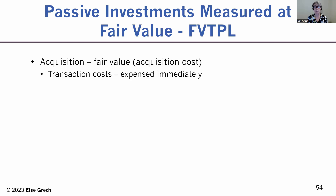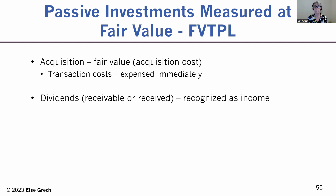Transaction costs, such as legal, broker, or administration fees, are immediately expensed on the income statement. This really makes sense considering how other gains and losses in this type of investment are also recorded. Dividends that are receivable or received are recognized in income as dividend income or dividend revenue — that's when the dividends are declared by the investee.